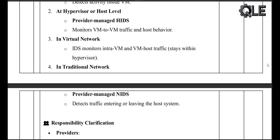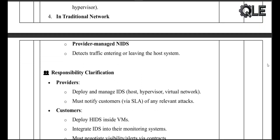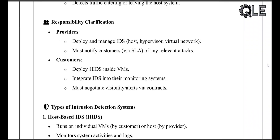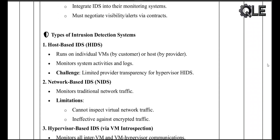The fourth location is the traditional network, which uses network-based IDS and monitors traffic entering and exiting the physical host. Regarding responsibility — cloud providers deploy and manage IDS at the hypervisor, host, and network levels, and must alert customers about threats through service level agreements. Customers install and manage HIDS inside their VMs, integrate IDS alerts into their own monitoring systems, and negotiate access and notification terms with providers.